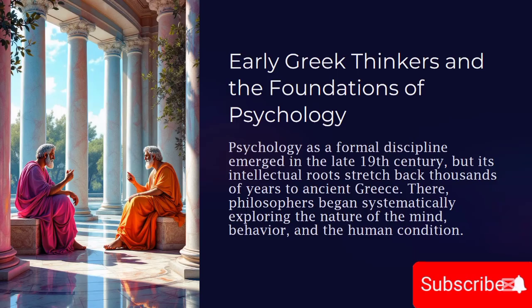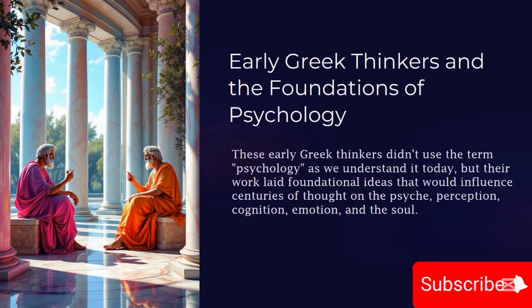Early Greek Thinkers and the Foundations of Psychology. Psychology, as a formal discipline, is relatively young, emerging in the late 19th century. However, the roots of psychological thought stretch back thousands of years, particularly to ancient Greece, where philosophers began to systematically explore the nature of the mind, behavior, and the human condition. These early Greek thinkers laid the foundational ideas that would influence centuries of thought on the psyche, perception, cognition, emotion, and the soul.